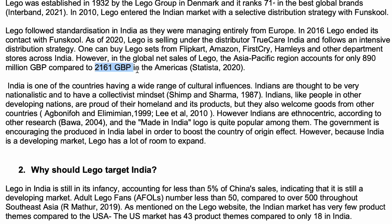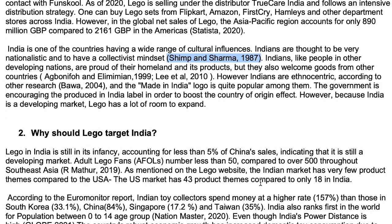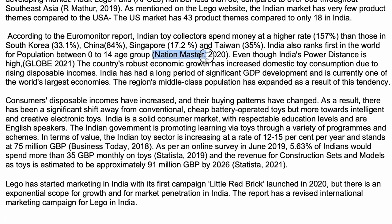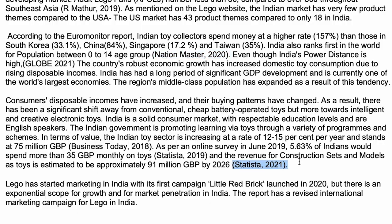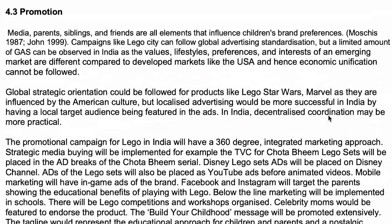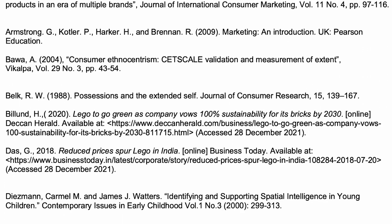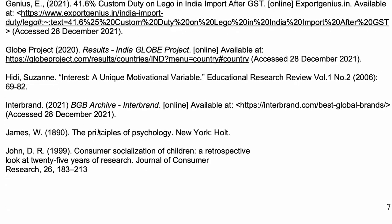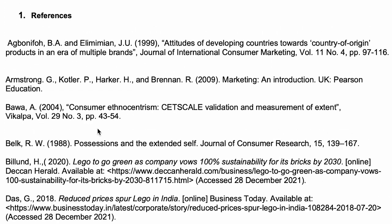Even if I write a number — for example, 1261 GBP — where did I get this information from? From Statista. Whatever information I've written between two brackets is called an in-text citation. For example, 'Indians have a collectivist mindset' — Shrimp and Sharma did their research and told me that. These are all in-text citations and everywhere in the document I have to write them. All of my assignment has to be based on proof.